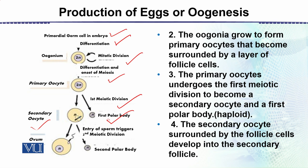During meiosis I in the primary oocyte, the spindle formation is not in the center — it becomes eccentric. When the cell divides, there is an unequal distribution of the cytoplasm, and this smaller cell is what we call the polar body. This is the first polar body.